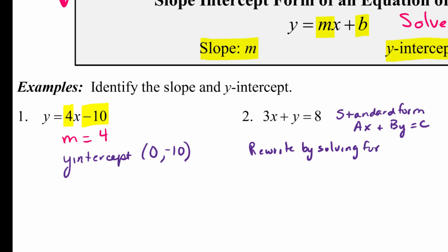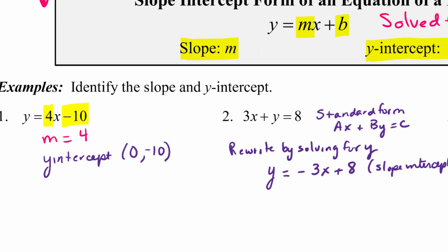So you want to isolate that y. So we're going to subtract the 3x from both sides, and we'll get y equals negative 3x plus 8. Now this is in slope-intercept form, so now we can read off of it the slope and the y-intercept.